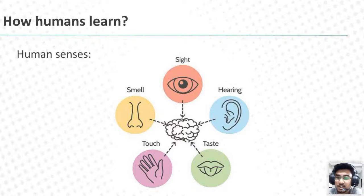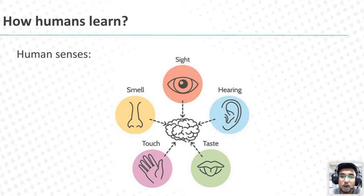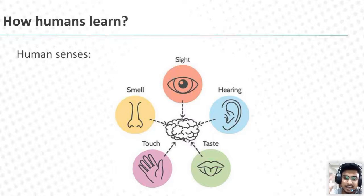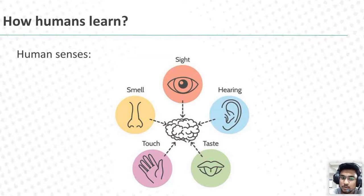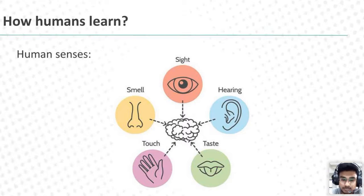From where do humans learn these things? Our first step is sensing the environment. Humans sense the environment through five senses: eyes, ears, tongue, touch, and nose — through which you can smell. All five senses perform the activity and the information is sent to the brain, which gives you a reaction — how you need to react.